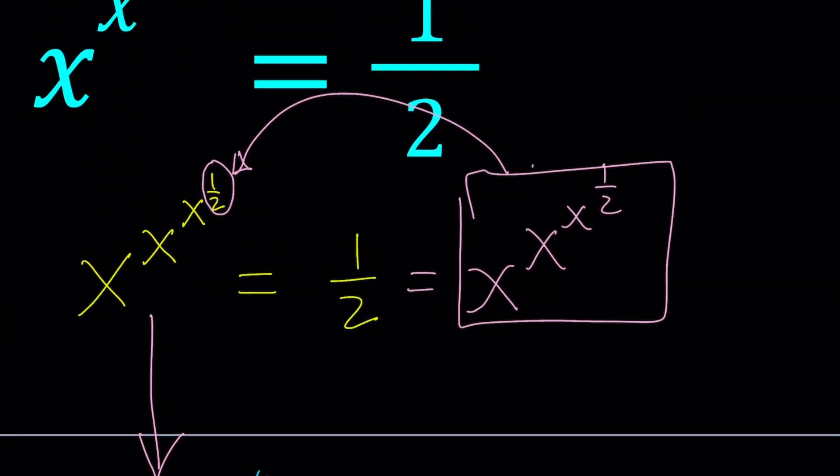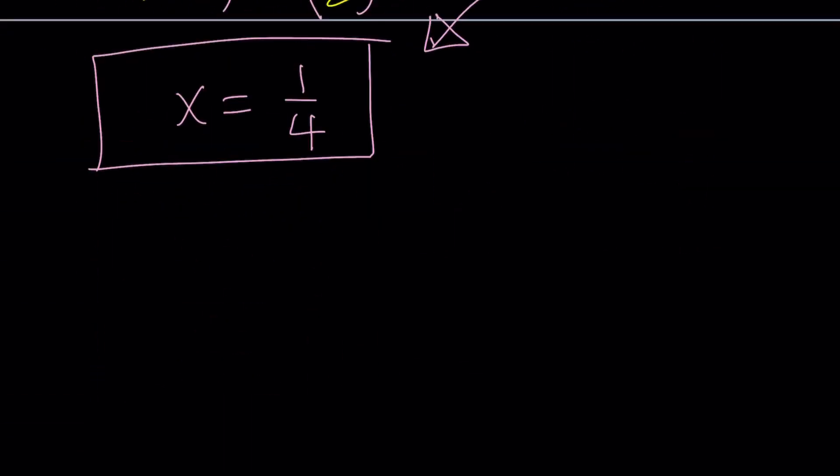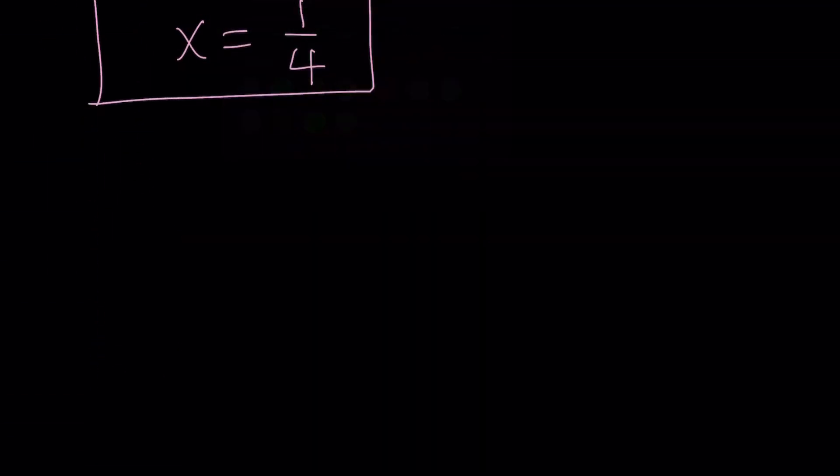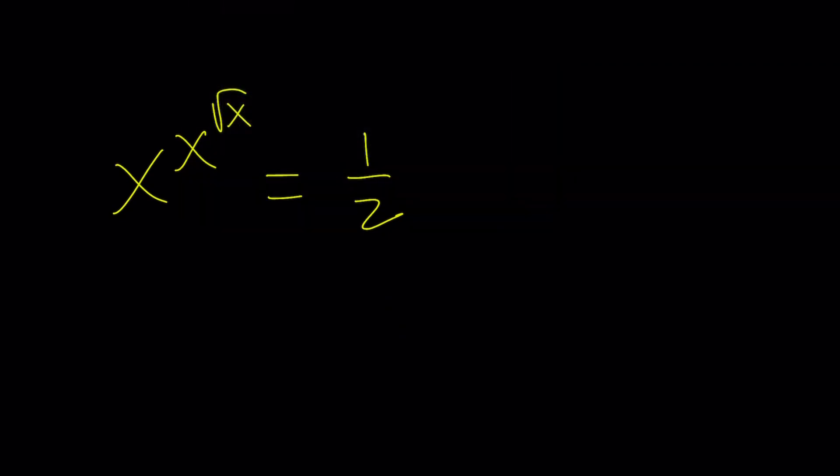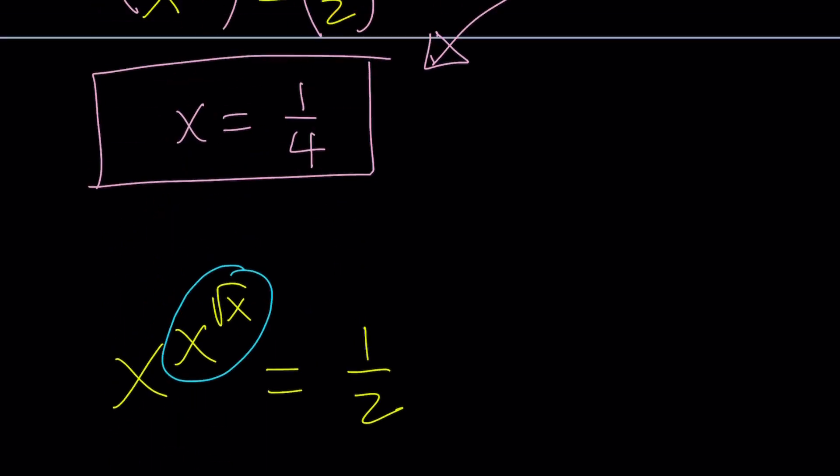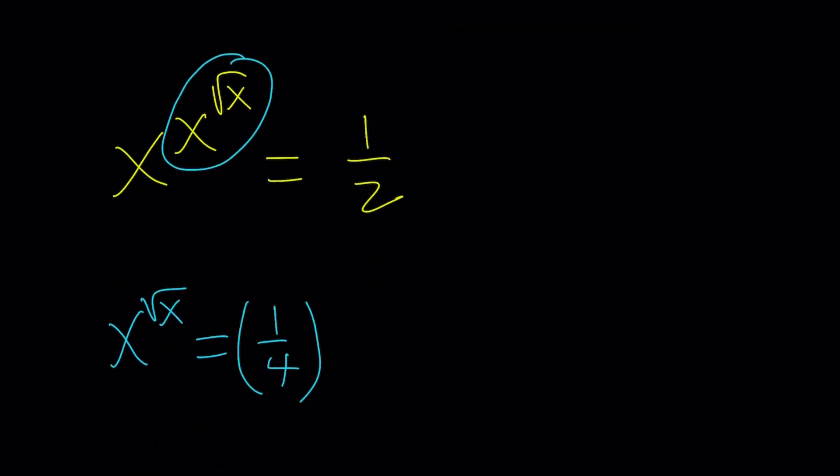What is my original equation? x to the power, x to the power, square root of x. Let's rewrite it. x to the power, x to the power, square root of x equals one half. I want to check one fourth. Is this actually going to work? One of the ways you can do this is, first, evaluate the exponent. What is x to the power, square root of x? Well, x is one fourth, so this is going to be one fourth to the power, square root of one fourth, which is actually one half. So, this is going to be one fourth to the power of one half, but one half means the square root of one fourth, which is one half, because one half times one half is one fourth.